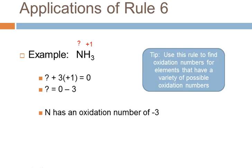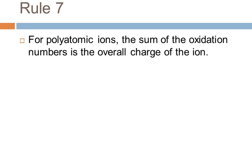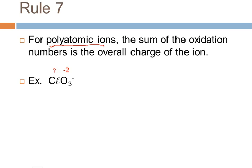We can use this rule to figure out oxidation numbers for elements that form multiple ions or polyatomic ions. Our last rule is similar but deals with polyatomic ions: if you have a polyatomic ion, the sum of the oxidation numbers equals the overall charge of the ion — not zero. For example, in the chlorate ion, oxygen has an oxidation number of minus two. There are three oxygens, and the sum must equal minus one. So the oxidation number of chlorine plus three times minus two equals minus one, which means chlorine in the chlorate ion has an oxidation number of plus five.